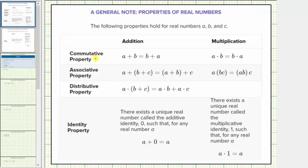First we have the commutative property of addition and the commutative property of multiplication. The commutative property of addition is when we change the order of a sum, which states a plus b equals b plus a. The commutative property of multiplication is when we change the order of multiplication, which states a times b equals b times a.